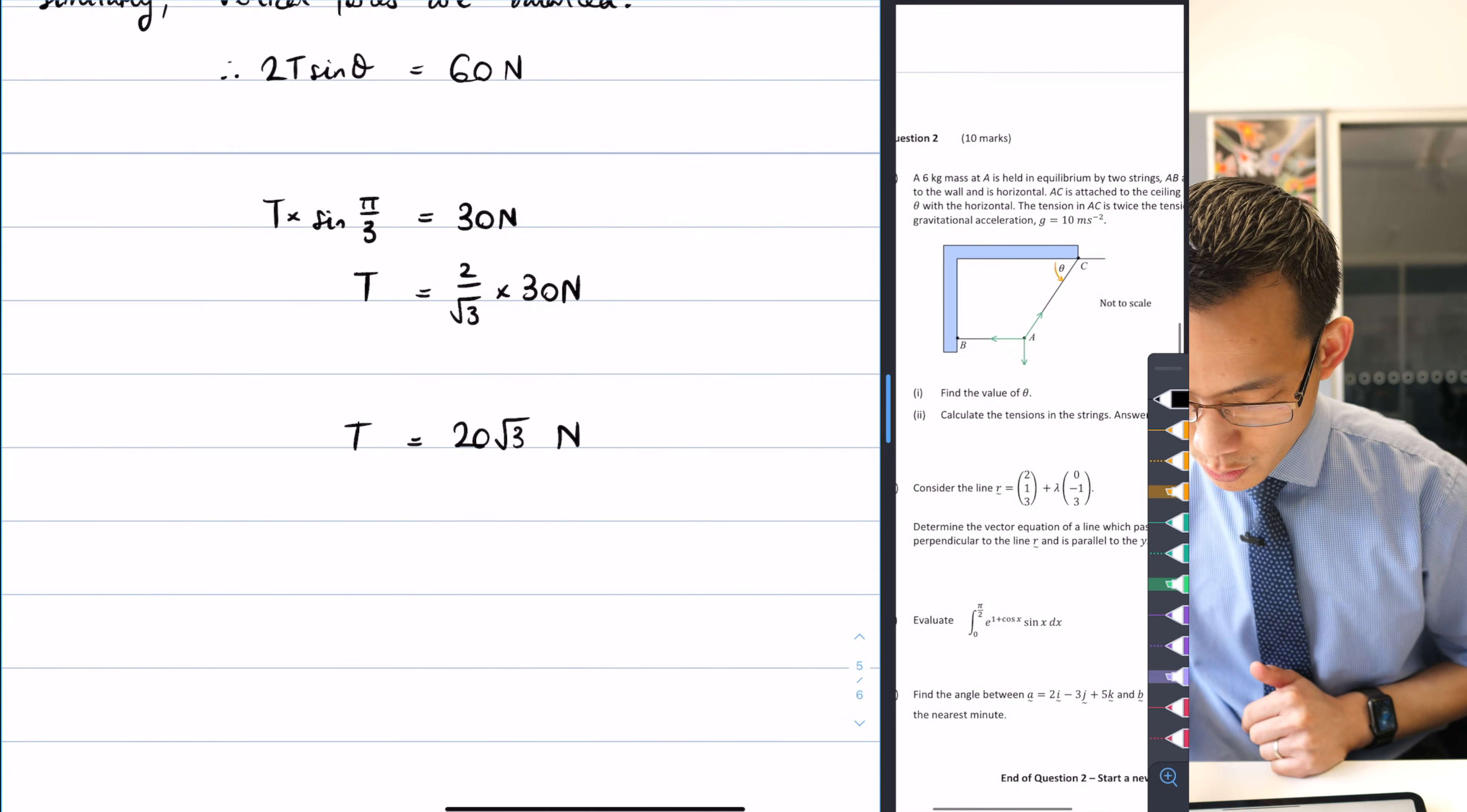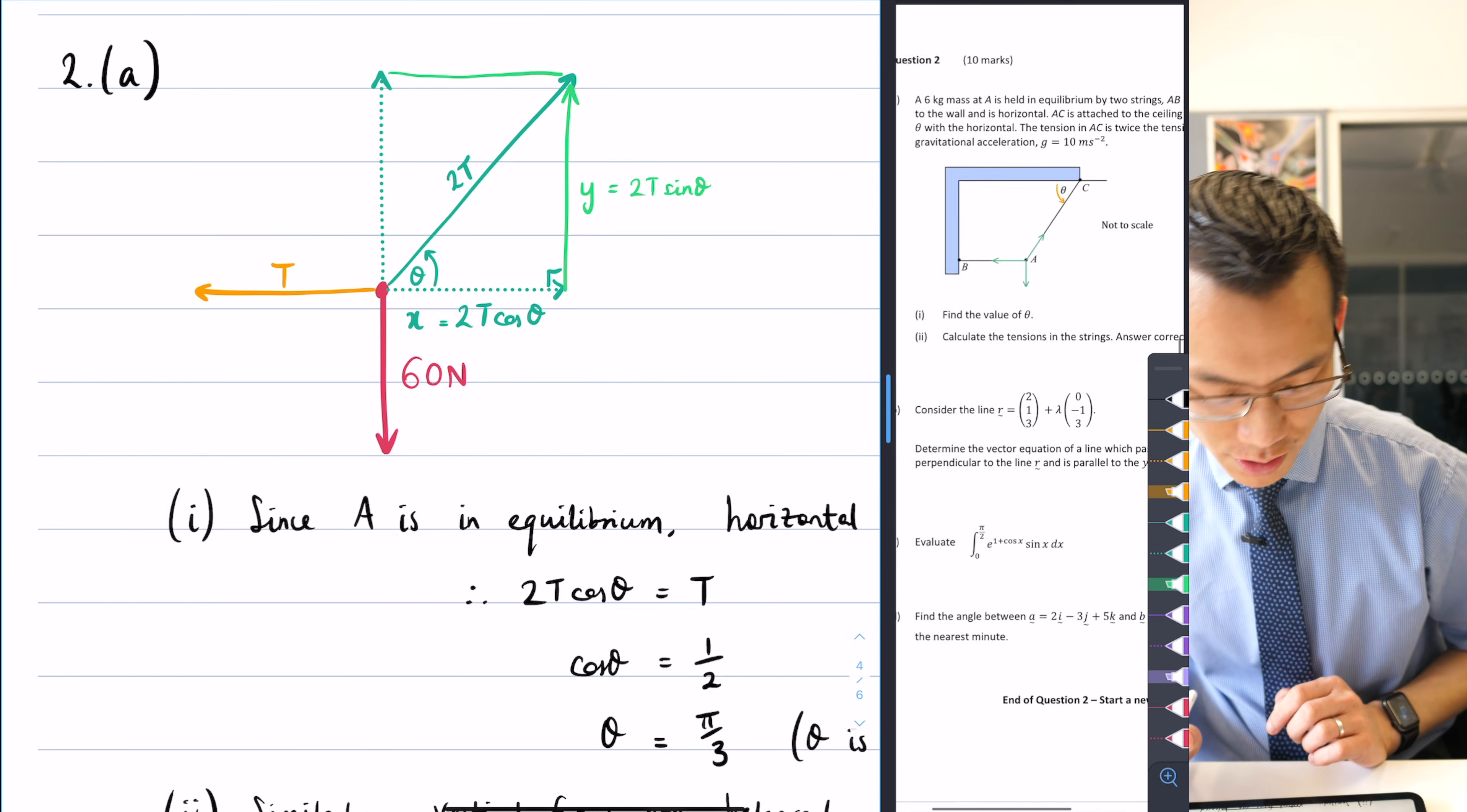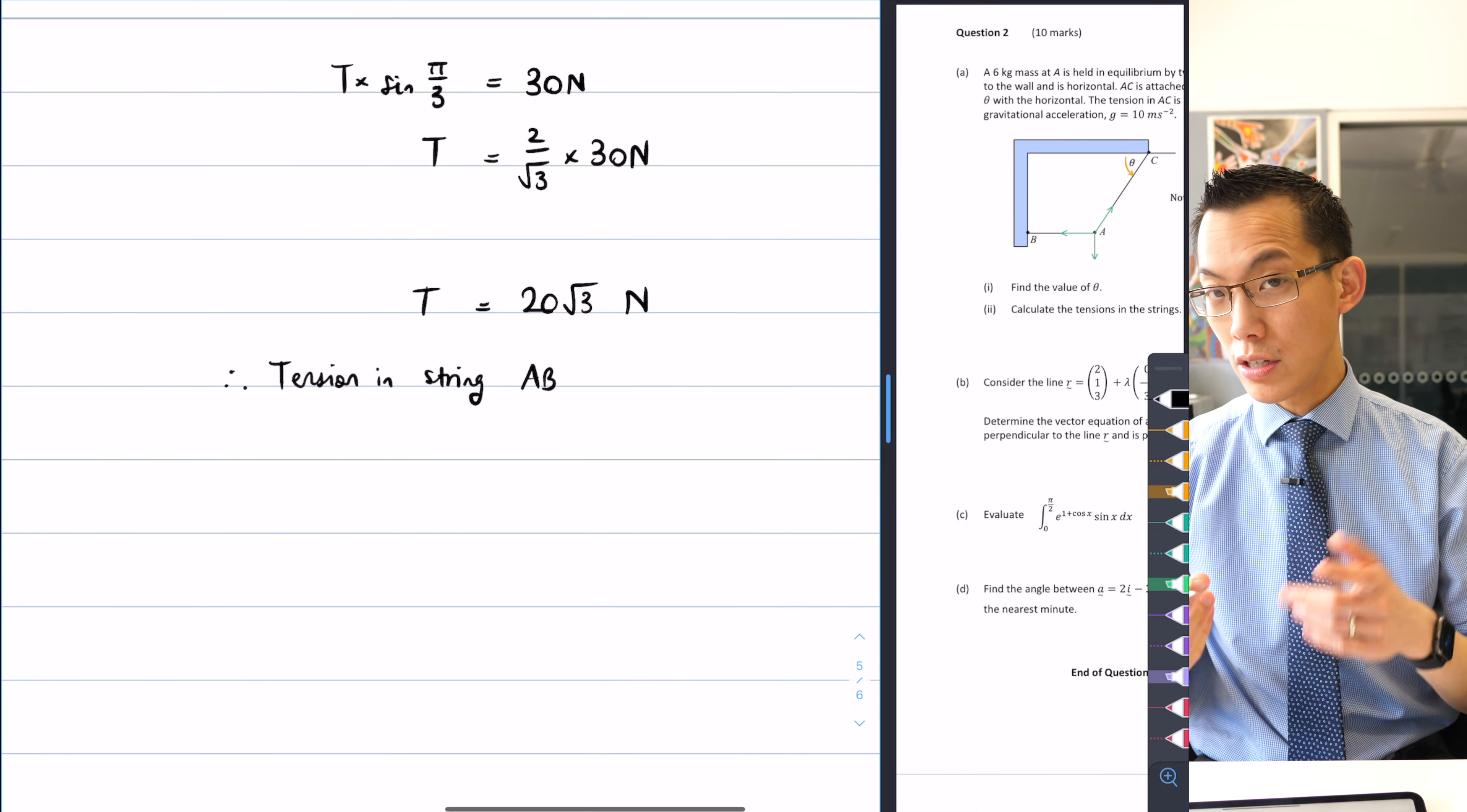What I noticed from the question is it says answer correct to one decimal place, so it wants me to approximate. This t represents the horizontal tension, so it's a string. Therefore tension in string AB is equal to this 20 root 3 newtons.